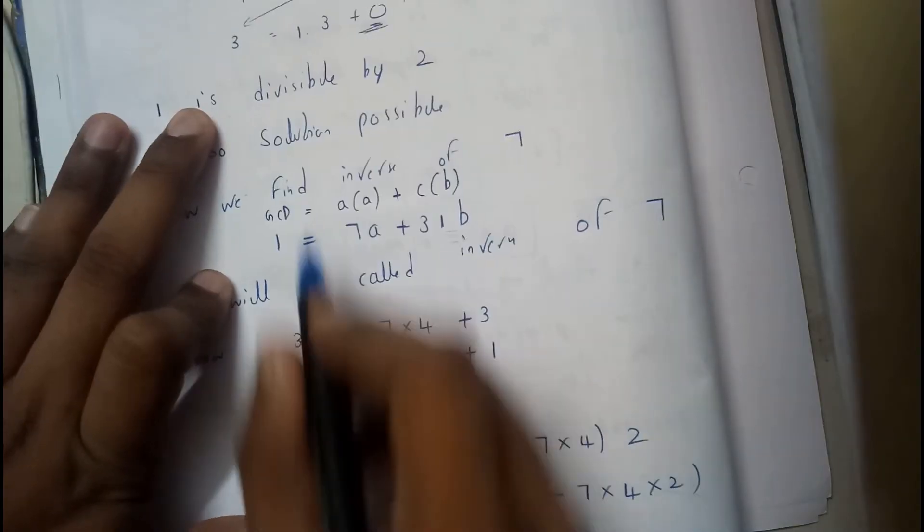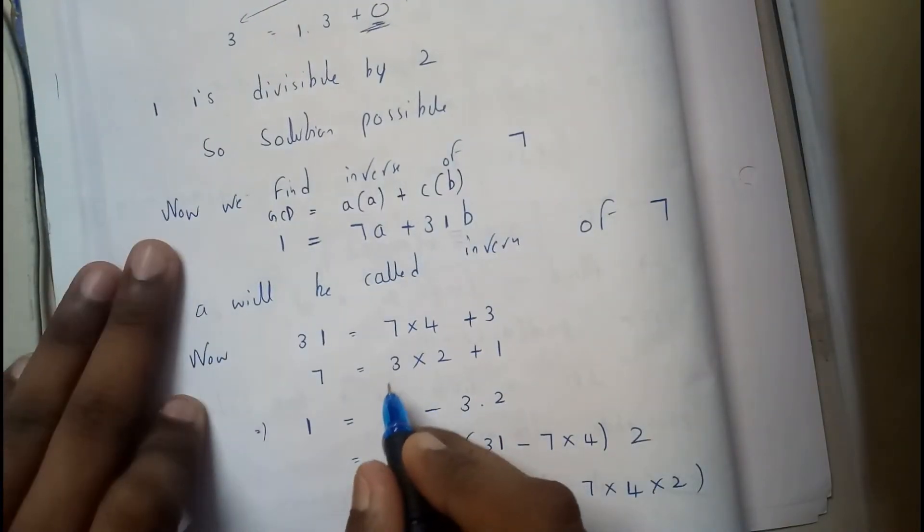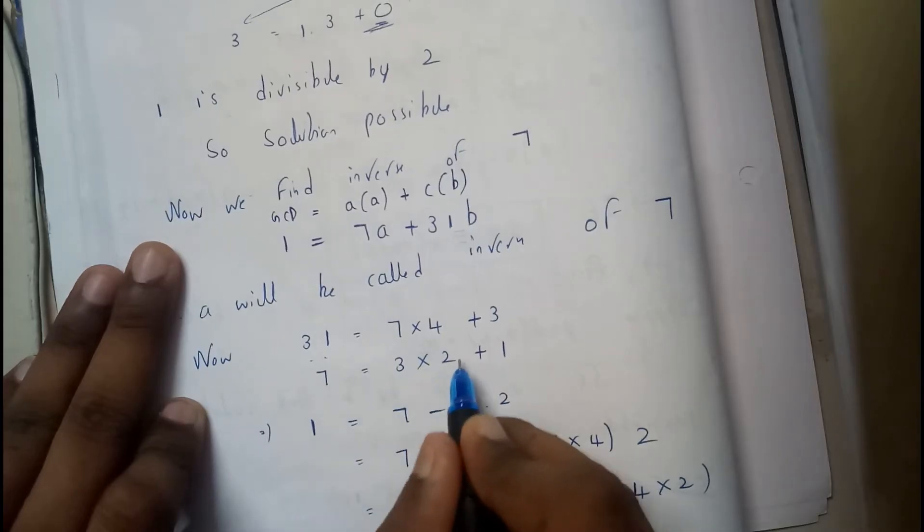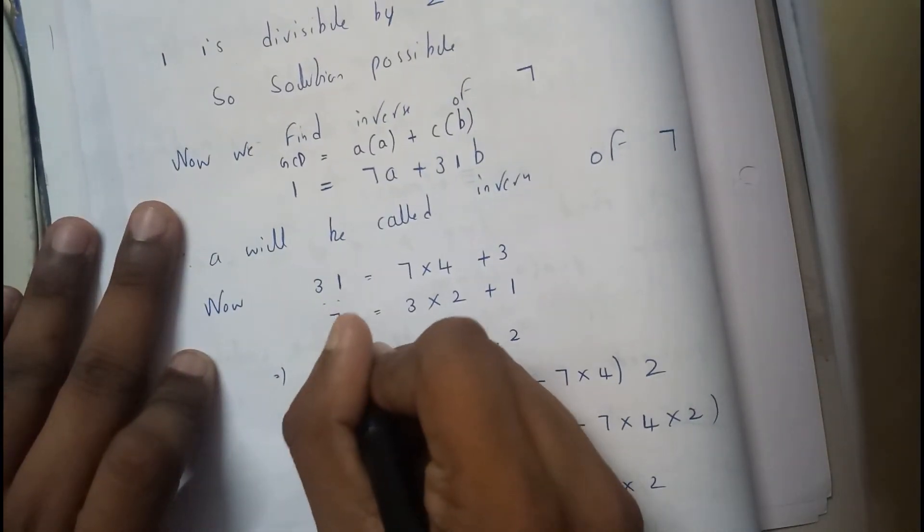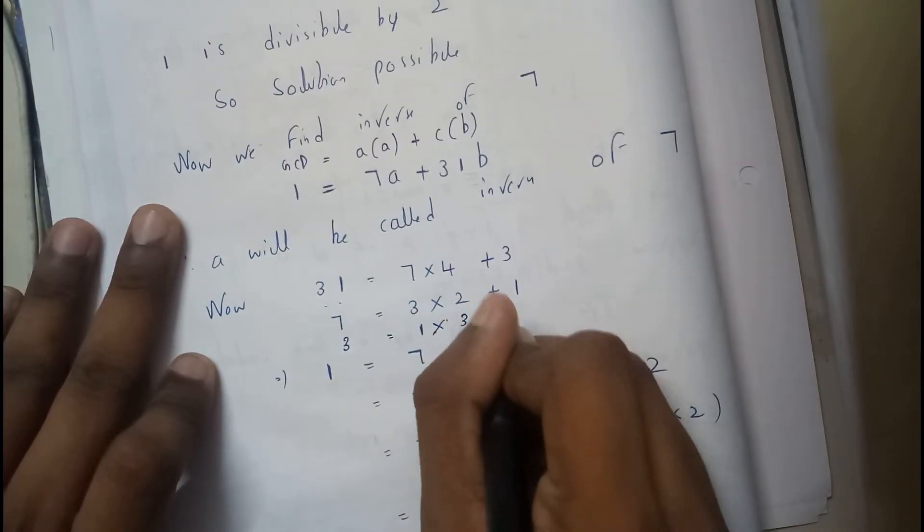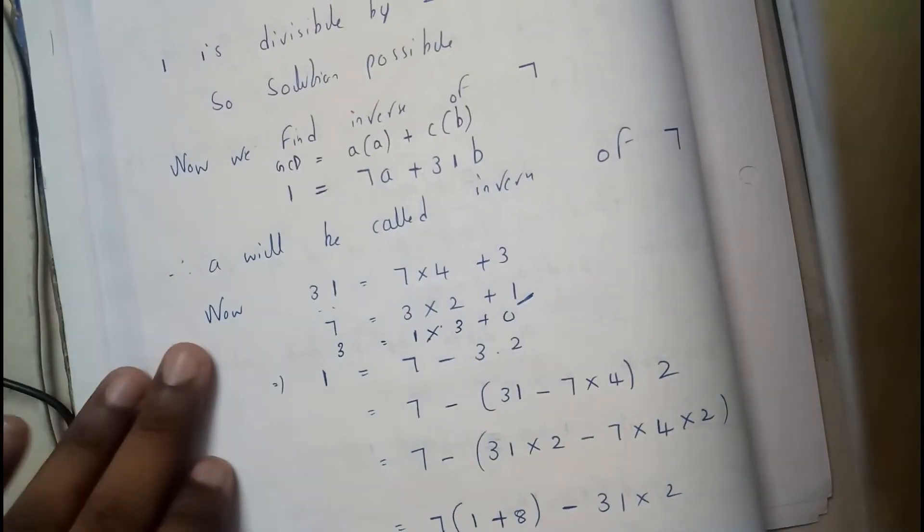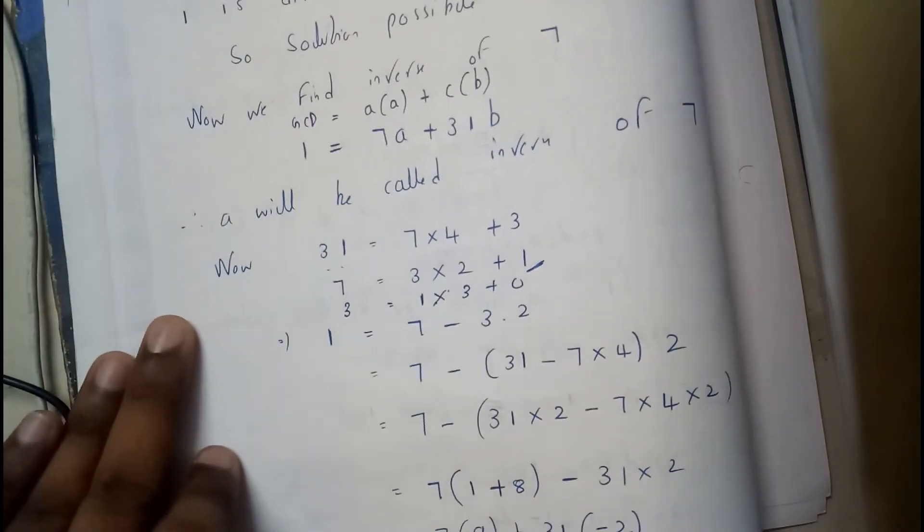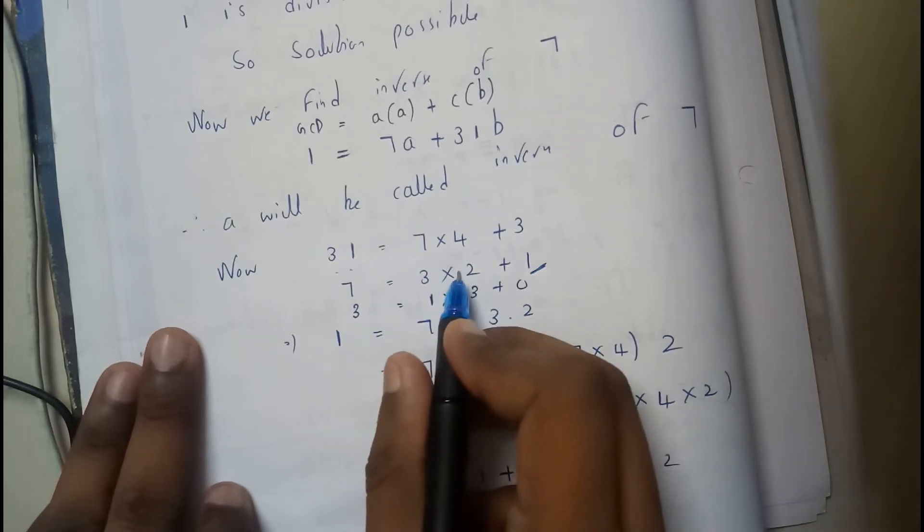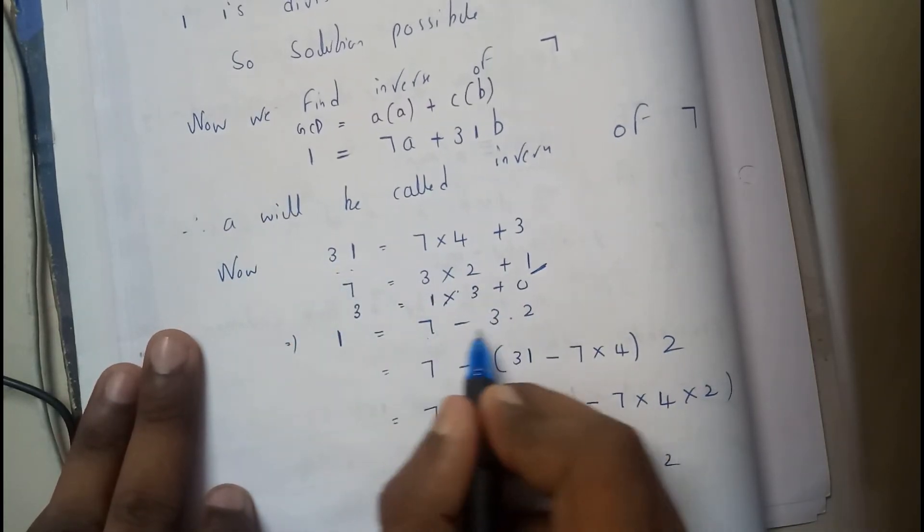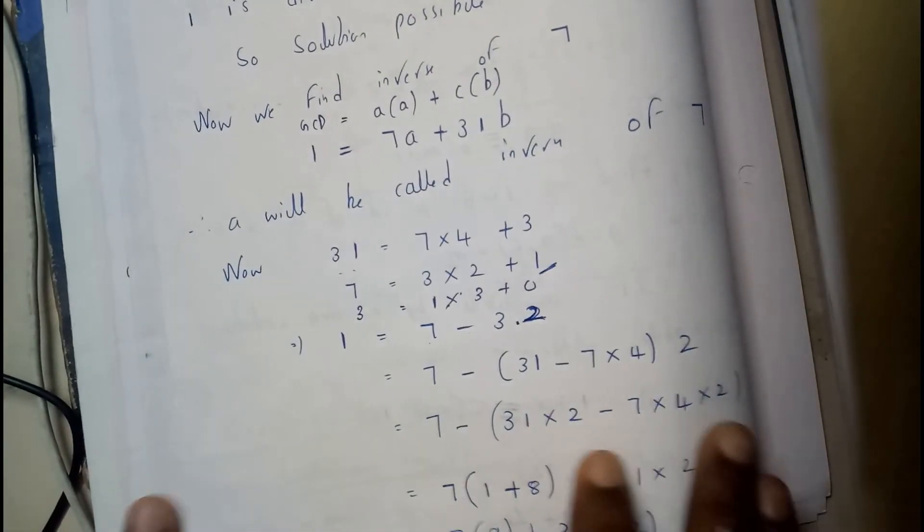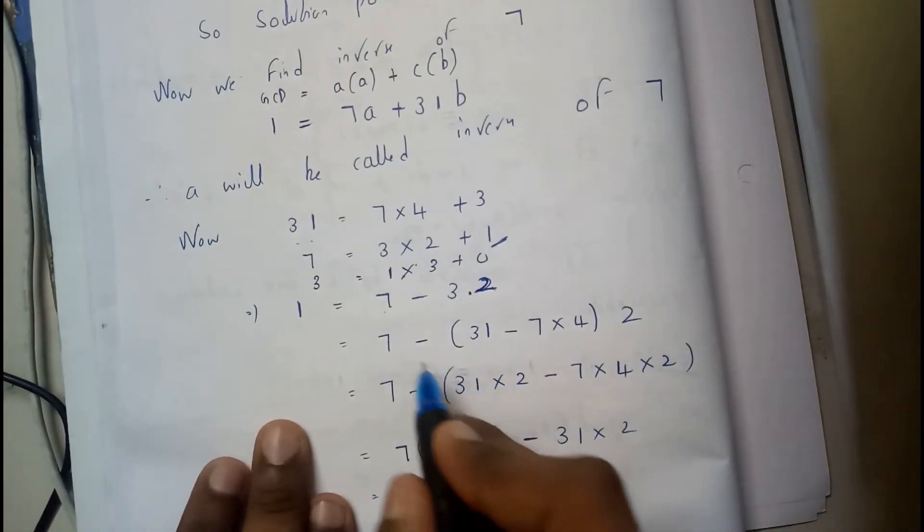Okay, initially we found the value for GCD of these values. I have just rewrote the steps right here. 31 is equals to 7 into 4 plus 3, 7 equals to 3 into 2 plus 1. I'll be writing the next step even so that it will be a bit clear. 3 is equals to 1 into 3 plus 0. Here 1 is the GCD. Wherever you got 1 as the GCD, that's the main key step. Where 1 is equals to, you'll be writing this outside, 7 minus 3 into 2.